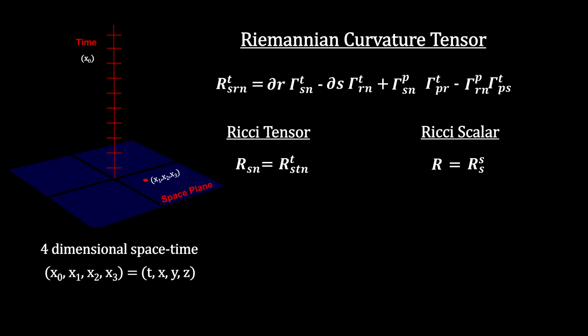First, we fix the generalized n-dimensional coordinates to our four spacetime coordinates. The convention is for numbers to run from zero to three, with zero being the index for the time coordinate.